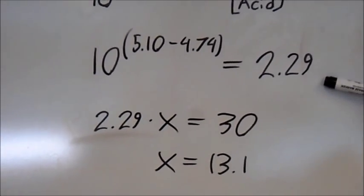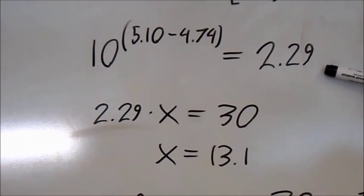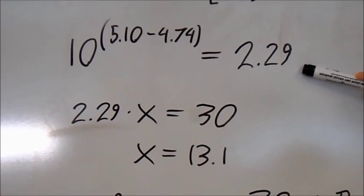This means that for every 2.29 units of base, we have 1 unit of acid.